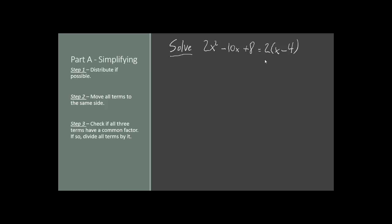The first thing we want to do is to try to distribute anything we can to make it easier to move the terms around. We do have an expression here that we can distribute. We can say 2 times x is 2x, and 2 times negative 4 is negative 8. The rest of the expression will stay the same for now.